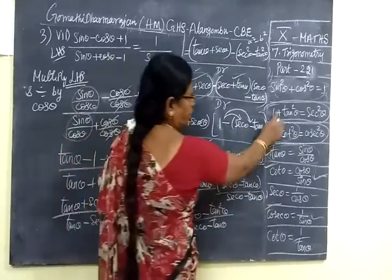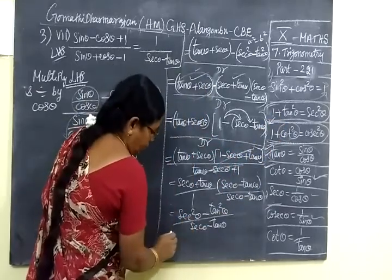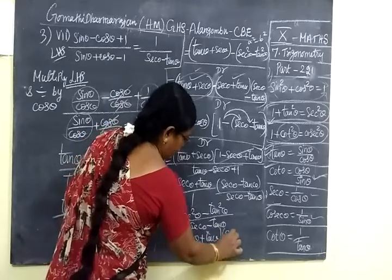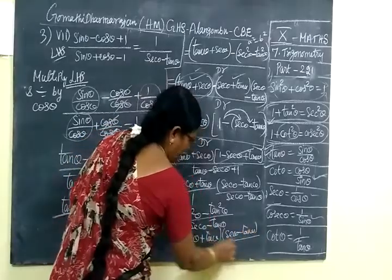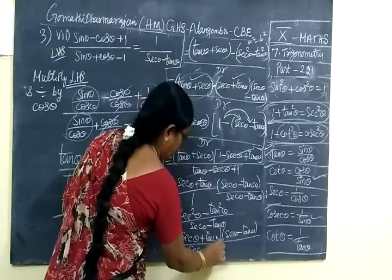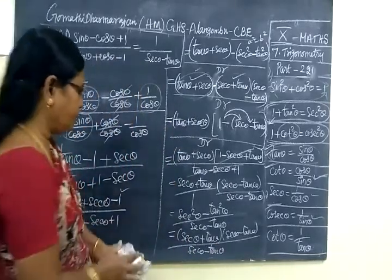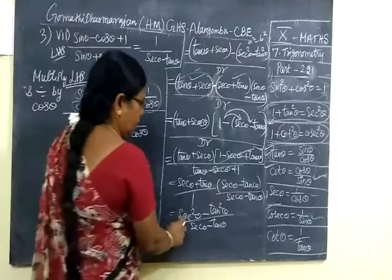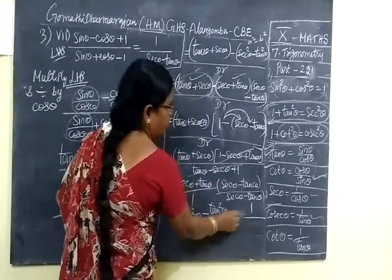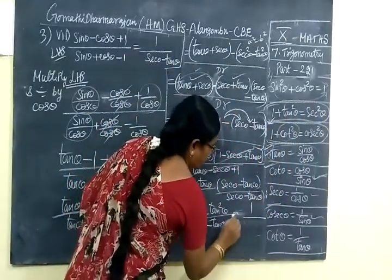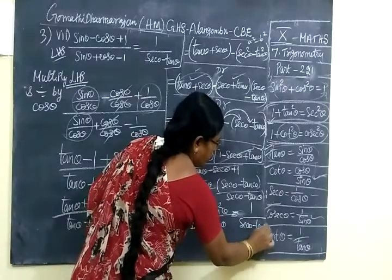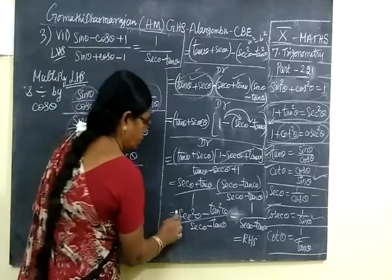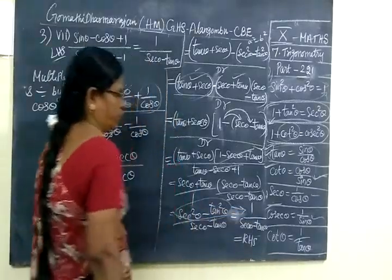So sec² θ minus tan² θ. For this, we are using the formula a plus b into a minus b. Same procedure at the opposite level: a plus b, then a minus b, divided by sec θ minus tan θ. So this is nothing but 1. Sec² θ minus tan² θ equals 1, so 1 by sec θ minus tan θ — this is equal to all of this. The complete answer is equal to 1. Thank you.